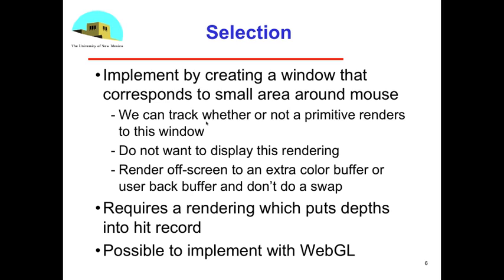Or if I didn't have an extra buffer, I could potentially clear the back buffer, render with this new window into that back buffer forming my hit list. If I don't do a buffer swap, then I'm never going to see what I rendered into it. Then I could clear it and do my normal rendering after the pick operation and then do a normal swap.